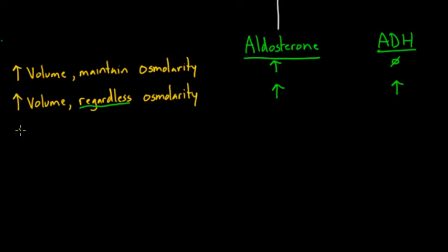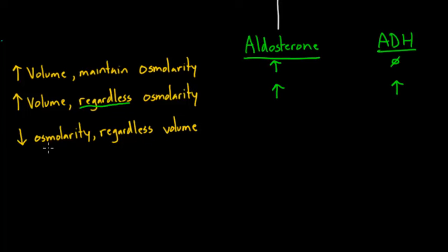Now let's say you wanted to decrease osmolarity, regardless of volume — you don't really care if the volume changes a little bit. In this case, if you don't care about volume and just want to decrease osmolarity, that's exactly what ADH will do — it will decrease osmolarity. In this case, you don't really need aldosterone, because you said you don't care about volume changes. So you just use ADH and tolerate the increase in volume.